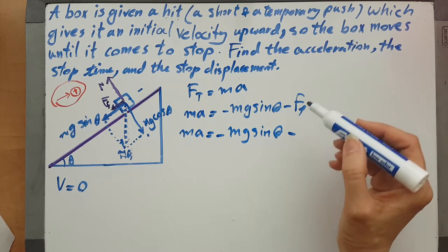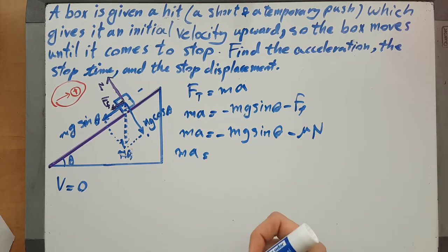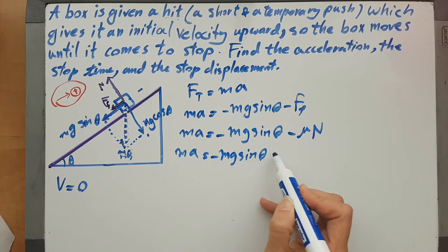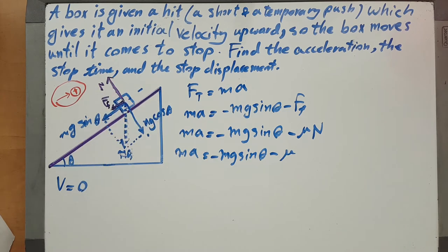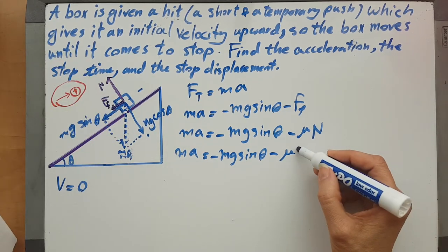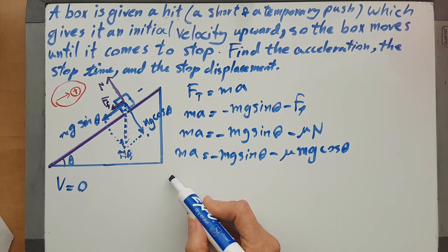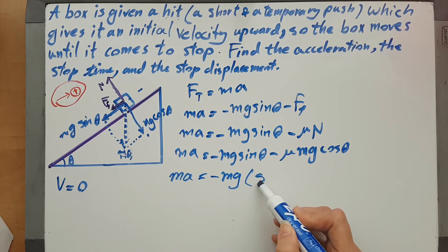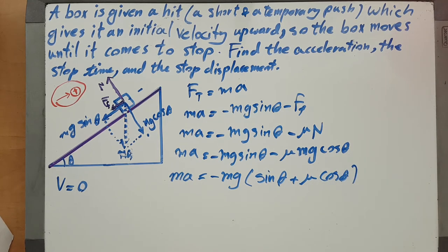And I know that the friction is mu N, and I know the N is equal to mg cosine theta. So the ma equals minus mg - I factor out the sine theta plus mu cosine theta - and the m will cancel, so the a would be negative g times sine theta plus mu cosine theta.